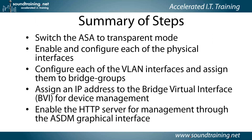Here's a summary of the steps. We're going to switch the ASA to transparent mode, then enable and configure each of the physical interfaces. We'll configure each of the VLAN interfaces and assign them to bridge groups, assign an IP address to the bridge virtual interface — the BVI — for device management, and then enable the HTTP server for management through the ASDM graphical interface.